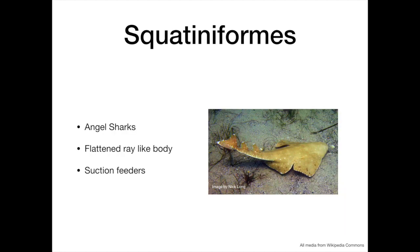The squatinomorphs, or angel sharks, are highly recognisable for their flattened, ray-like shape. They are suction feeders, laying camouflaged on the seabed and waiting for prey to swim above them, when they open their mouths and create a negative pressure gradient, drawing food into their mouths.